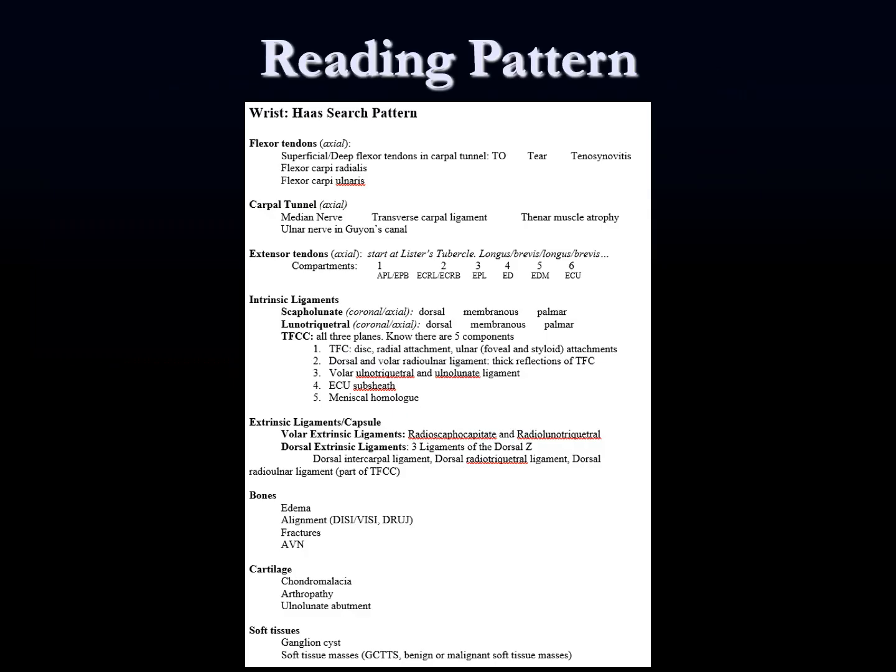This is the reading pattern. It goes down and starts with tendons, then goes into ligaments — so it's sort of an outside-in approach — and then finally at the end, bones, cartilage, soft tissues. We'll just take one by one and go through all the anatomy, hopefully with pretty good scrollable images. I did try to find a pretty normal study — it was a little harder than I thought; I'm always on the lookout for good normal studies on young people.